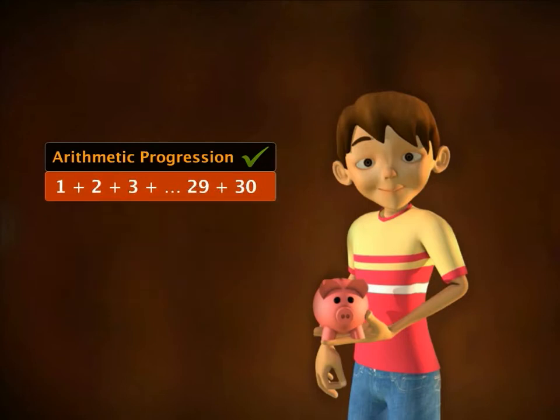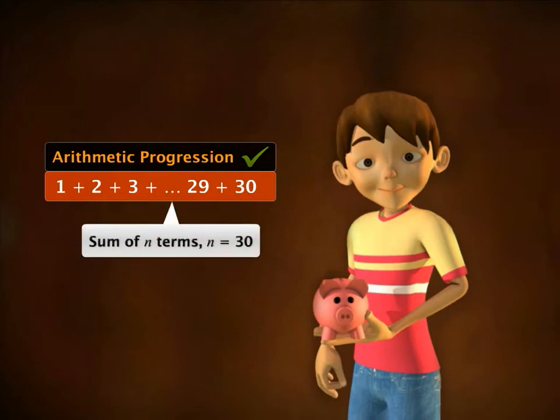The total money that Sam will have after 30 days is in the form of sum of n terms of an arithmetic progression.